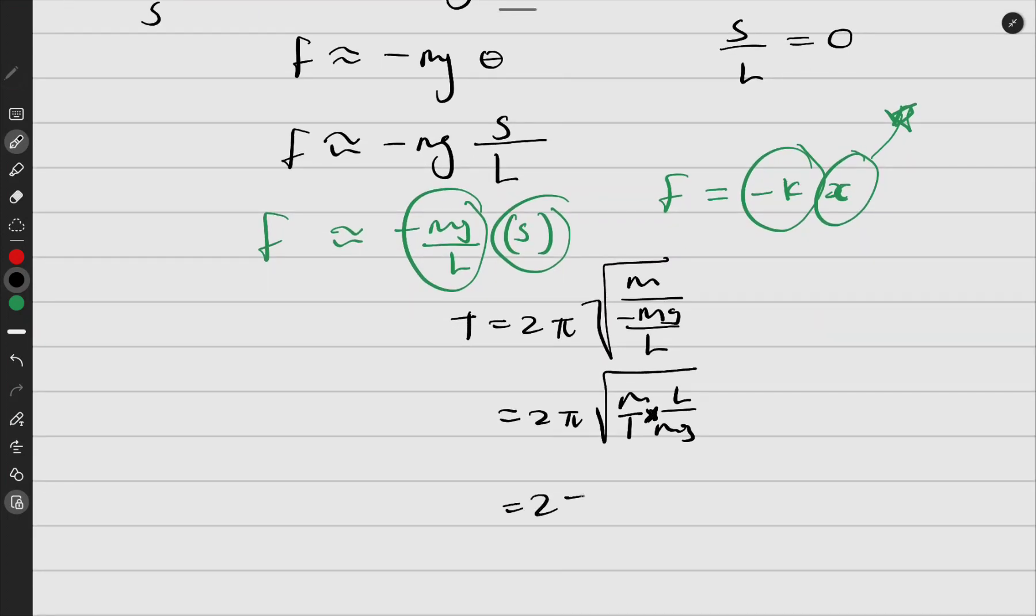Then you'll have 2π and then root, and I can see some things canceling. The m will cancel. We'll have L over g as our answer.